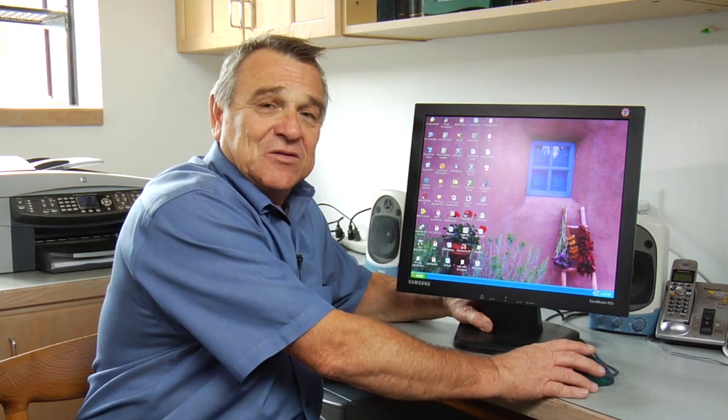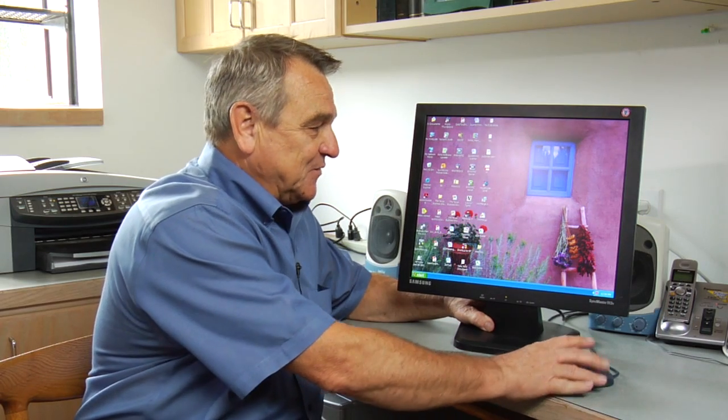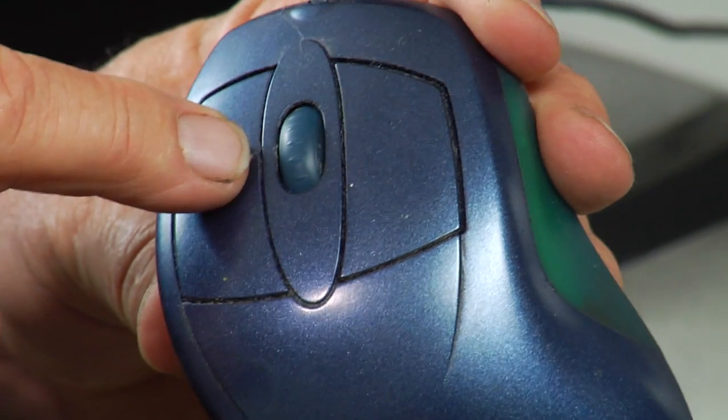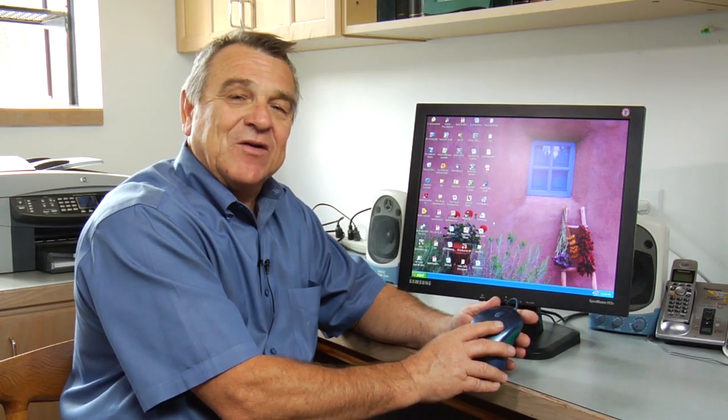Computer mice also have various functions attached to them. And you'll notice that these functions are operated by buttons. This mouse has three buttons. It has two on the top and one on the side. And you can assign these buttons to perform various functions.